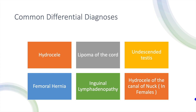The common differential diagnoses are hydrocele, lipoma of the cord, undescended testis, femoral hernia, inguinal lymphadenopathy, and hydrocele of the canal of Nuck, which occurs in females.